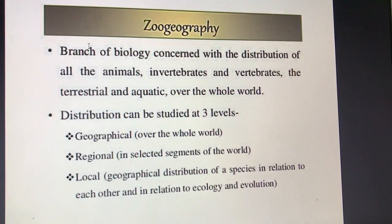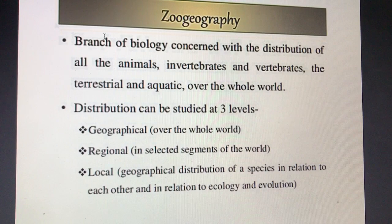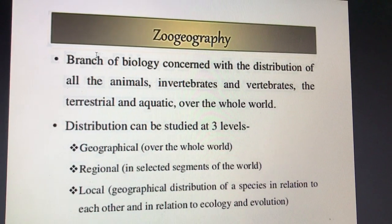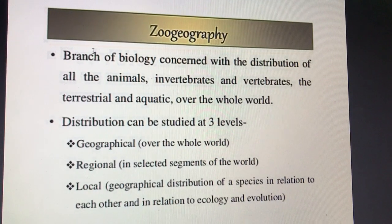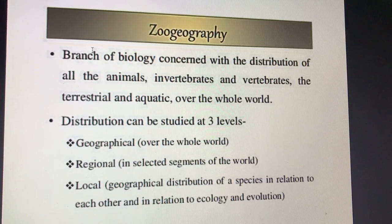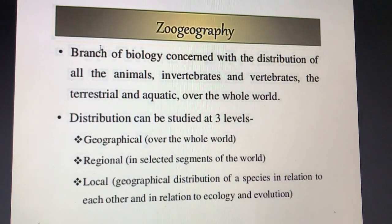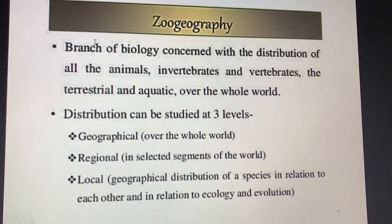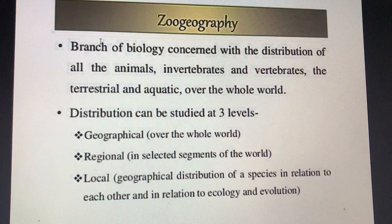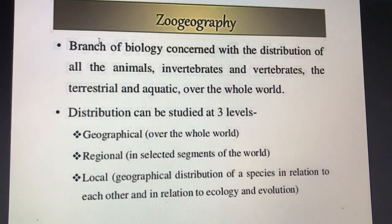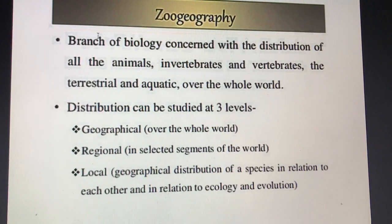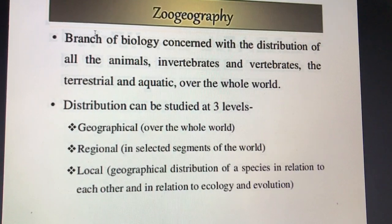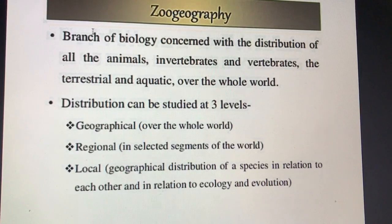Zoogeography — 'Zoo' means Animals, 'Geo' means Earth, 'Graphy' means Distribution. भौगोलिक आधार पर जन्तुओं का जो Distribution होता है, जो फैलाव होता है, वो कहां-कहां पर किस प्रकार से है? क्योंकि अगर हम पूरे विश्व को देखें या इंडिया को देखें तो सभी जगह की climatic conditions बहुत ही फर्क होती हैं और उसी के आधार पर वहां की वनस्पति या जन्तुओं का Distribution होता है।